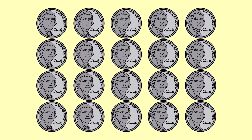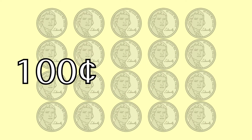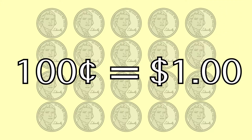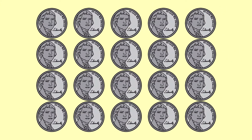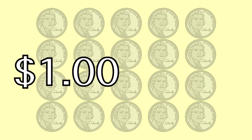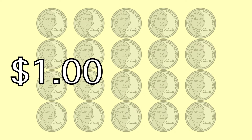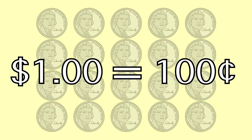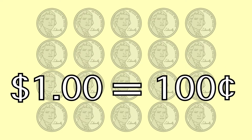First we used one hundred pennies, now we are using twenty nickels. One hundred cents is one dollar, twenty nickels is one dollar. Later on in the video, we will be using ten dimes, and then four quarters, and then one one-dollar bill.